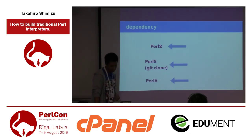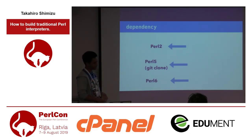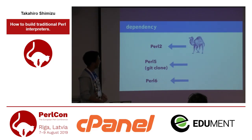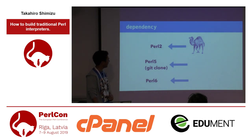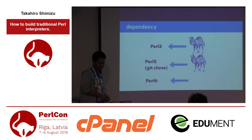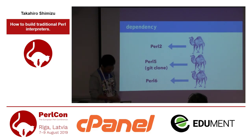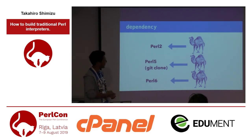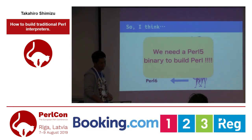From this discussion, we have understood the Perl dependencies. To build Perl 2, we need Perl 5, because we should modify the code using Perl. When building Perl 5, we need Perl 5 because we use the git command using git source code. To build Perl 6, we need Perl 5 because we must execute configure.pl, which is written in Perl 5. So we need a Perl 5 binary to build any Perl version.